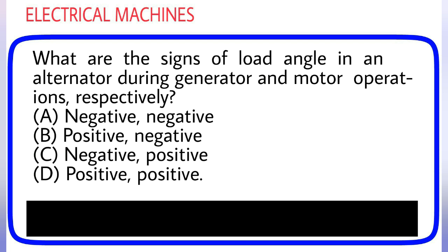What are the signs of load angle in an alternator during generator and motor operations respectively? (A) Negative, negative, (B) Positive, negative, (C) Negative, positive, (D) Positive, positive. Answer is option B.